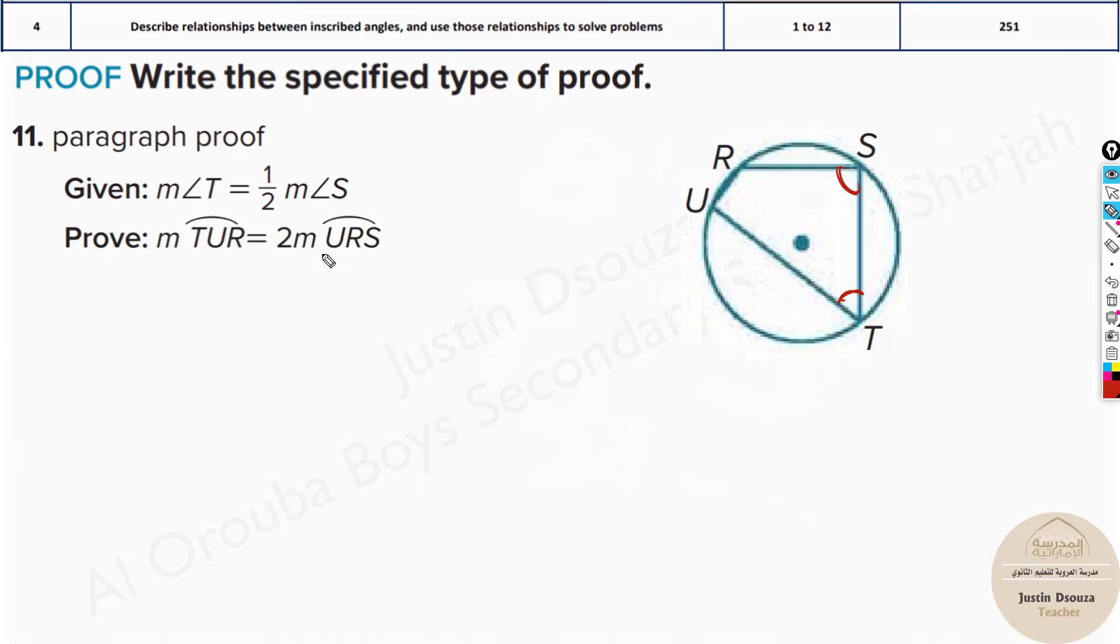And we need to prove TUR equals 2 times the measure of URS. Now from inscribed angle theorem we can say angle S equals half of arc TUR. And what about angle T? Measure of angle T is half of arc URS. And they have already given us measure of angle T is half of measure of angle S. So we can substitute these two. Because we know the relationship of S from inscribed angles and T, the values.